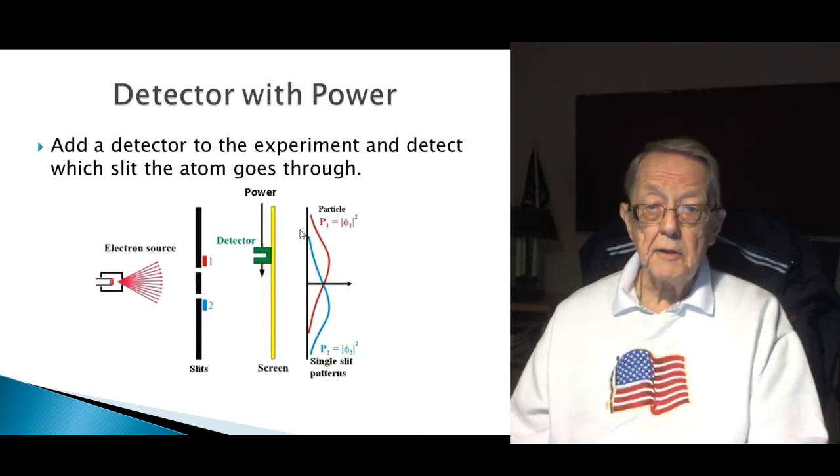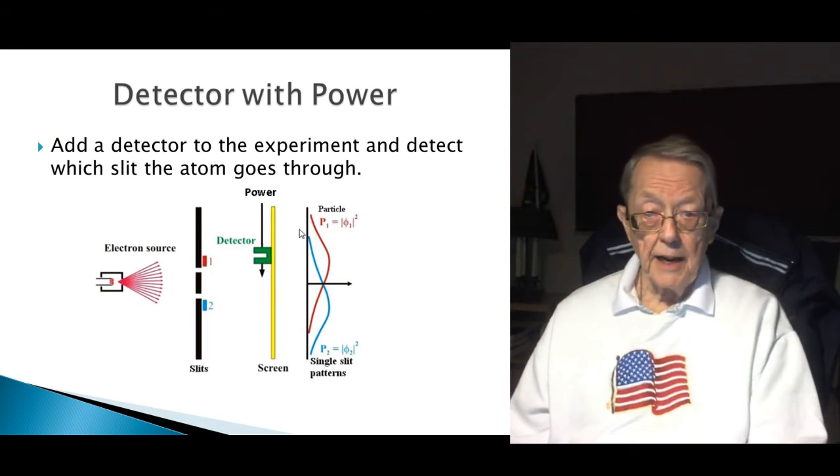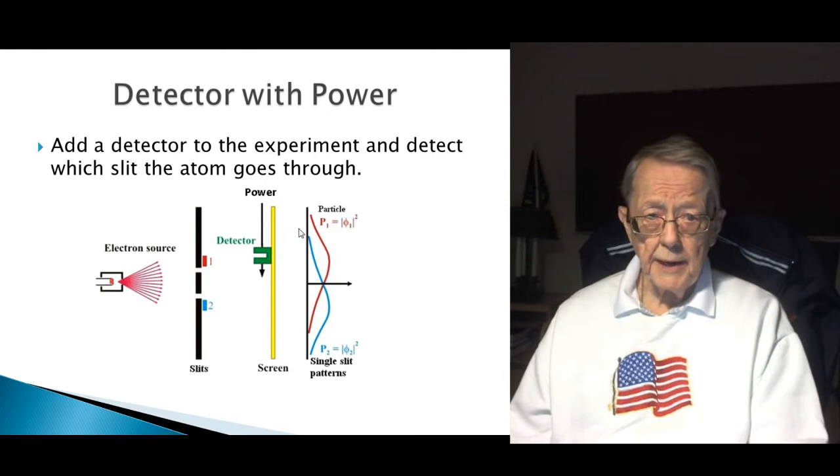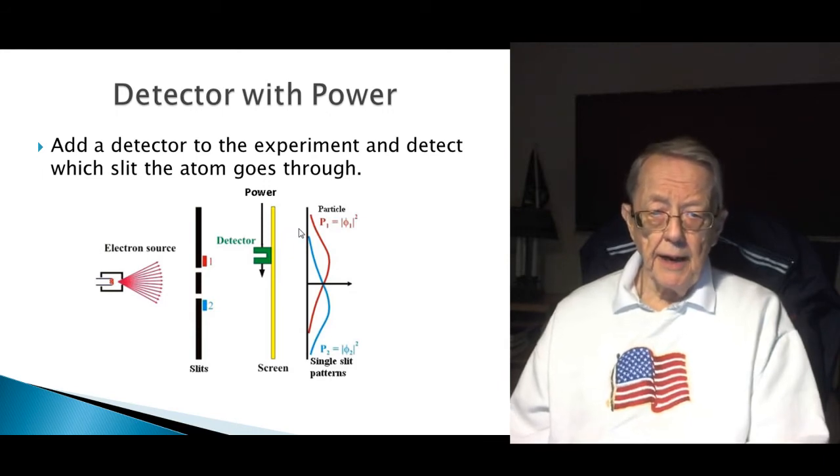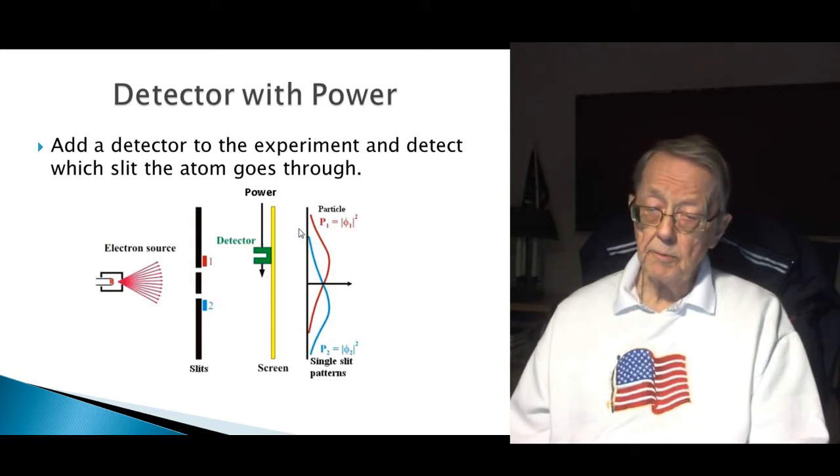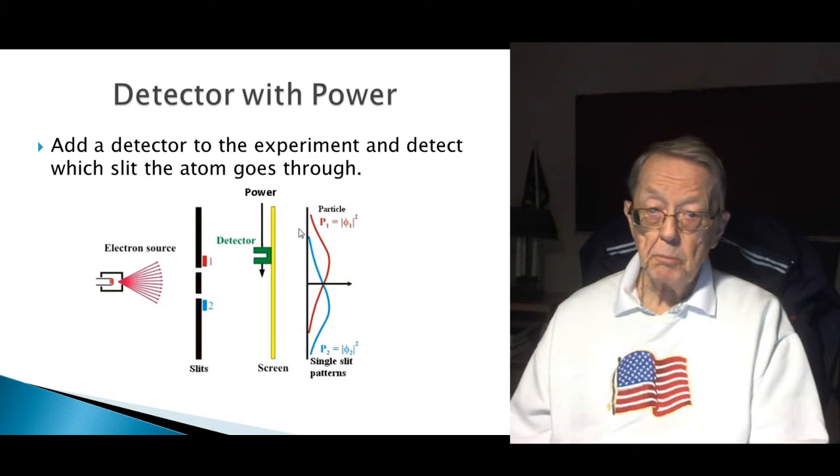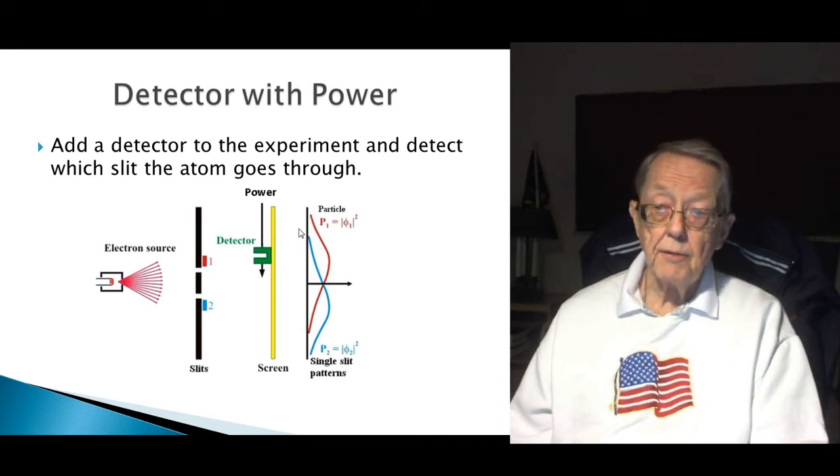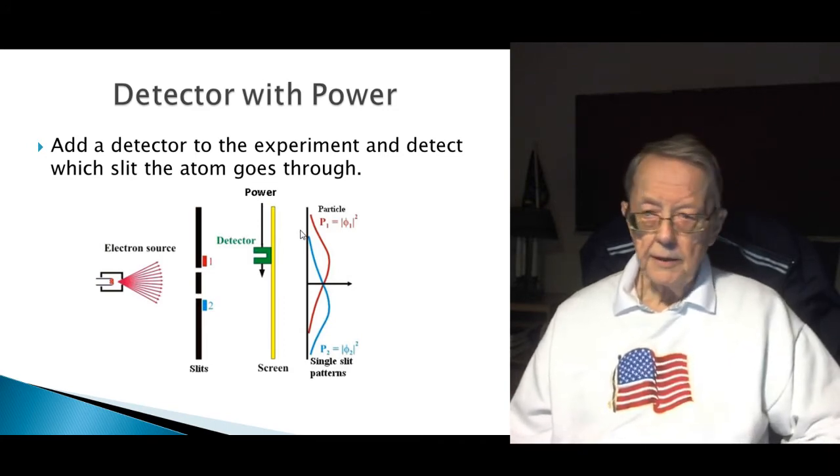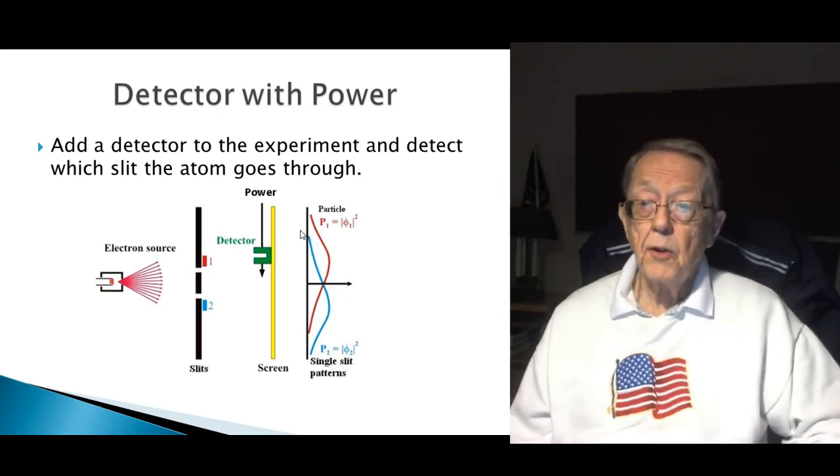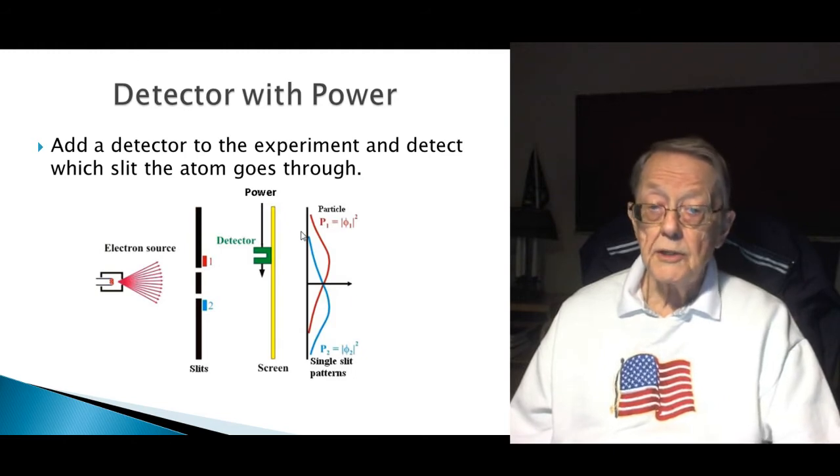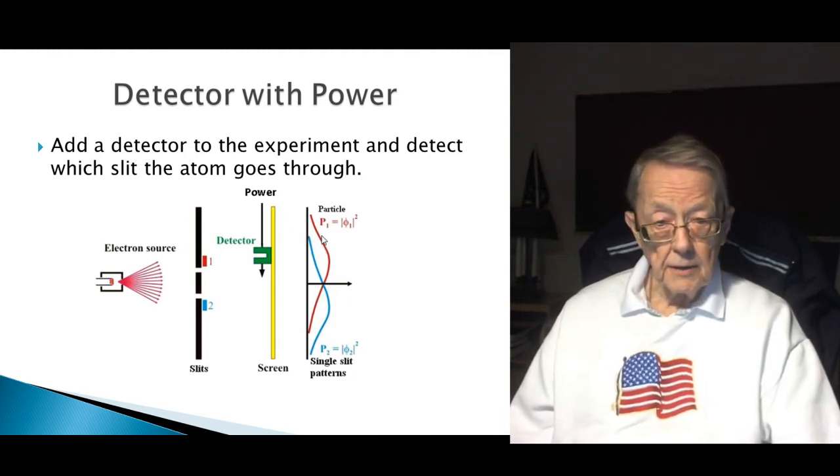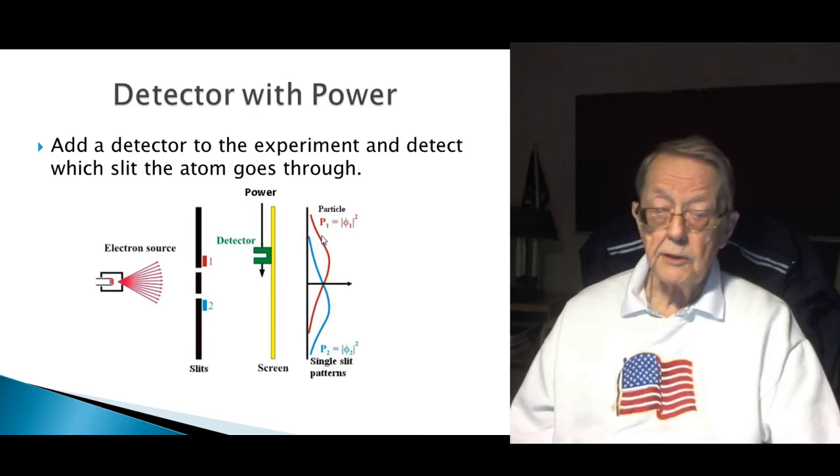Okay, so now they put in a detector to see which side the atom goes through. Shoot one atom at a time towards the screen with two slits. And they put in a detector. And they expect, really, to get an interference pattern. But they don't. The detector does indicate somehow that half of them goes through the top slit. And therefore, maybe the other half goes through the bottom slit. But they don't get an interference pattern. They're expecting to see an interference pattern. And the only thing they're trying to find out is which side does the atom go through. And clearly, the atom goes through one side only. But it gets the wrong pattern.